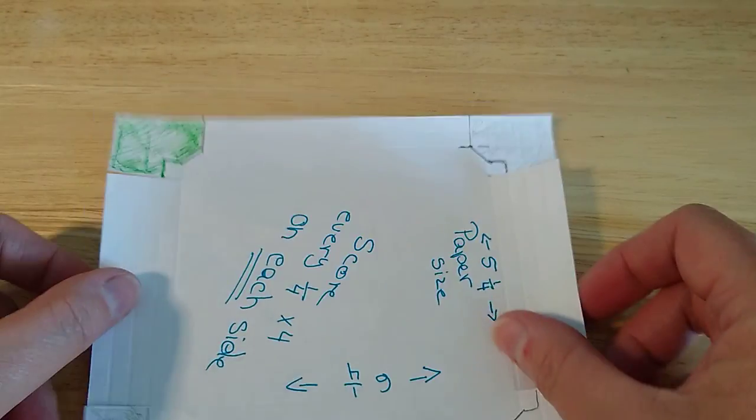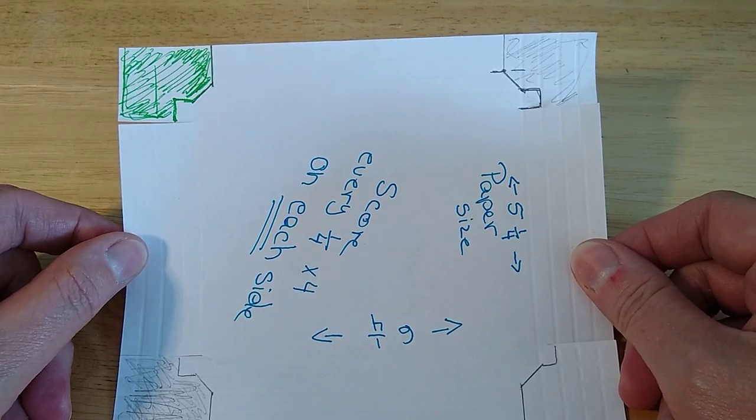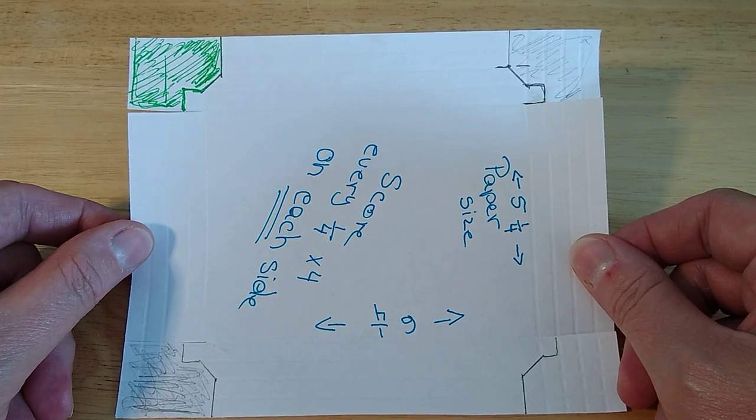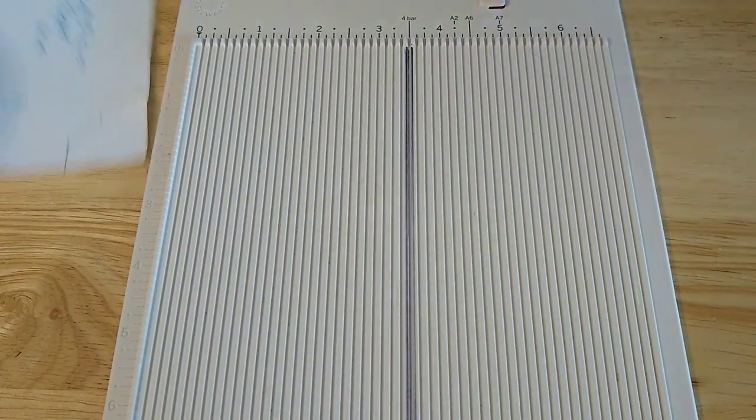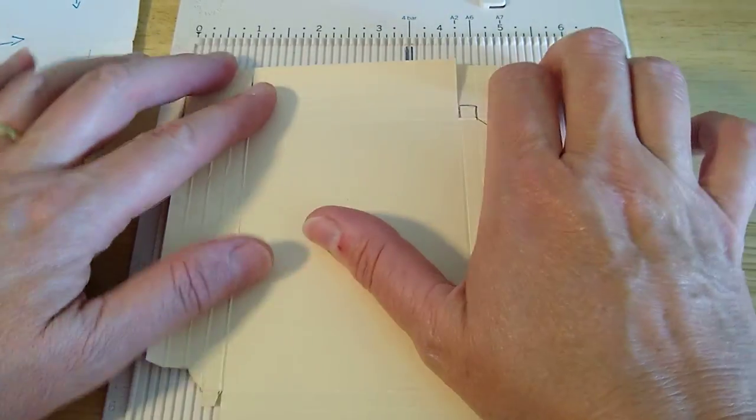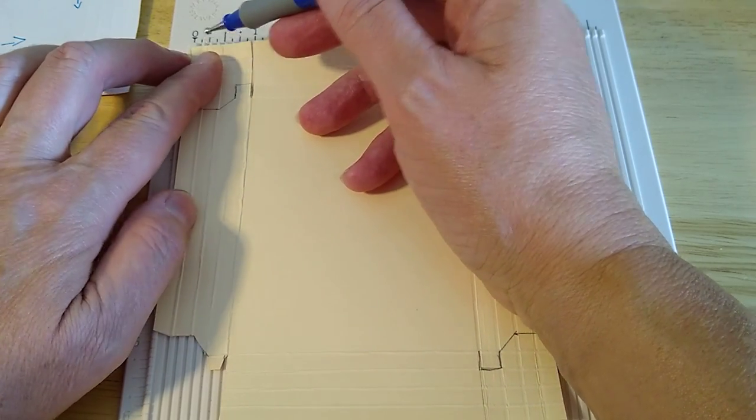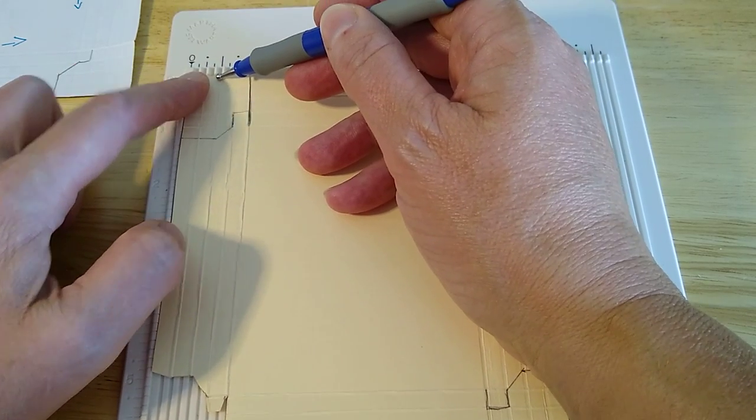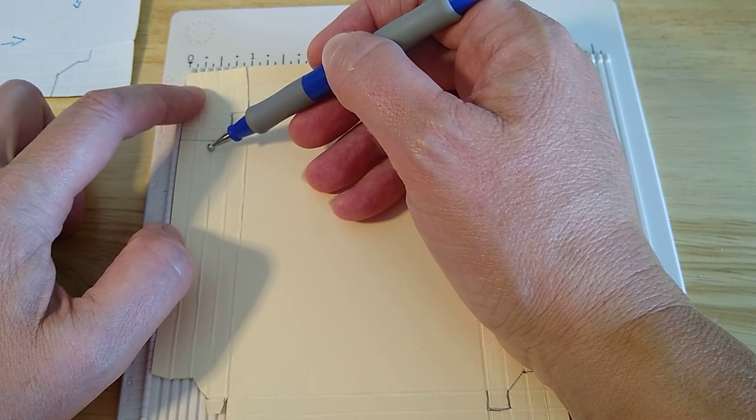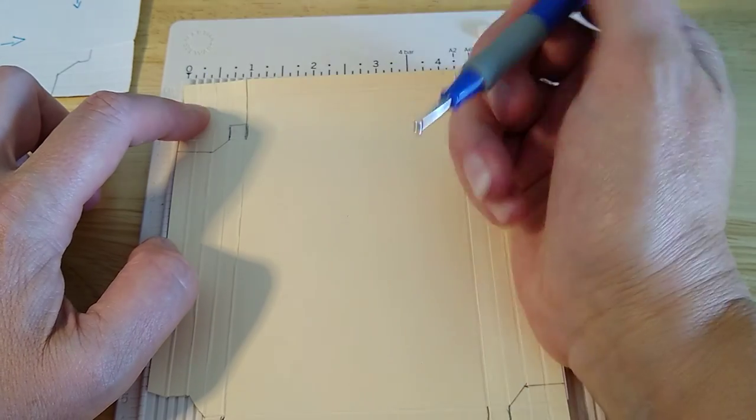The first thing you need is a piece of cardstock that measures five and a quarter by six and a quarter. You will have to get your scoring board out. And you have to score your cardstock on all four sides every quarter of an inch. So you score at a quarter, at a half, at three quarters, and one inch. You do this on all sides.